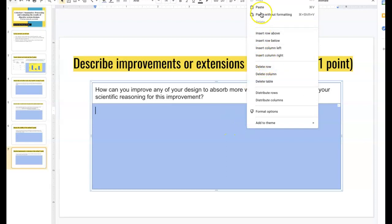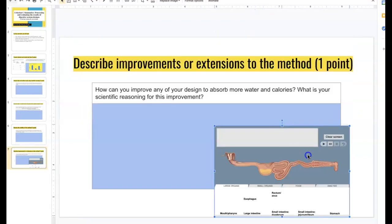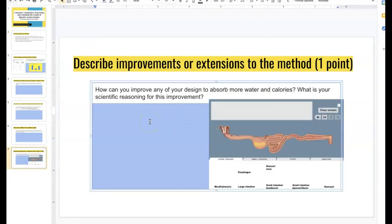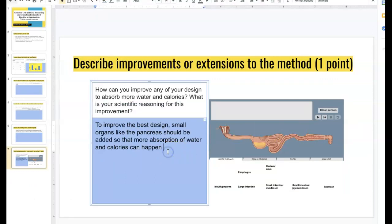And then that would complete your summative. So you're going to tell me to improve the best design, add small organs like the pancreas, so that more absorption of water and calories can happen because, and that's where you start telling me, what do those added organs, what will they do to help with absorption? Because our task is to absorb water and calories. All right, so that's the whole summative for Criterion C. Work hard.